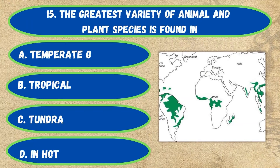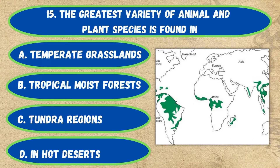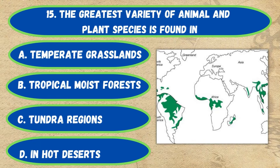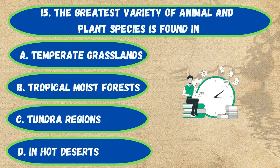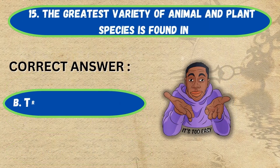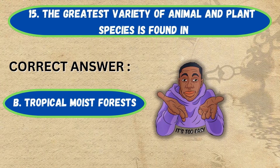Question number 15. The greatest variety of animal and plant species is found in: option A, temperate grassland; B, tropical moist forests; C, tundra regions; D, hot deserts. The correct answer is option B, tropical moist forests.